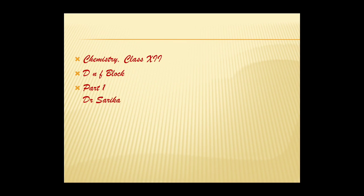First of all, we should know what D block and F block elements are. The D block elements include the transition metals — the 3d, 4d, 5d, and 6d series. The D block of the periodic table contains elements of Group 3 to Group 12, in which the D orbitals are progressively filled in each of the four long periods.